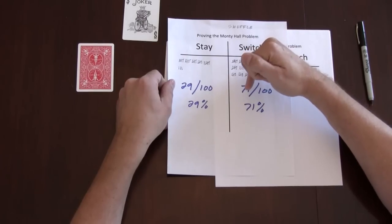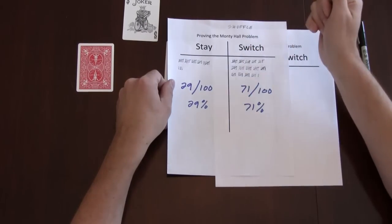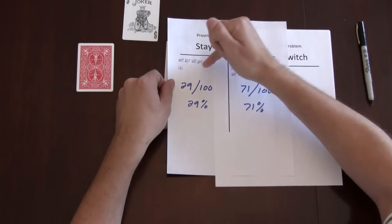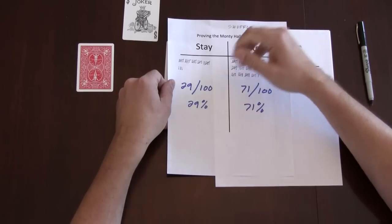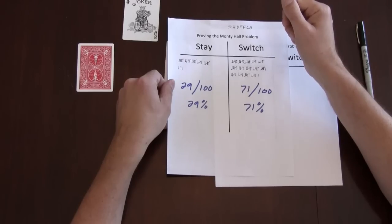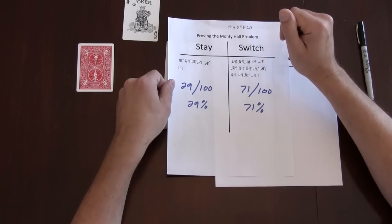When I switched, 71 out of 100 times or 71%, I got a car. We expect 33 and 66. With a small set like this, these numbers are close enough to prove what we're looking for.